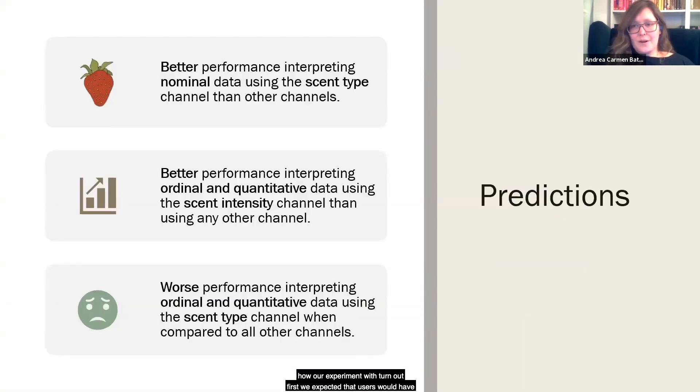We had three main predictions about how our experiment would turn out. First, we expected that users would have better correctness when interpreting nominal data using the scent type channel relative to their use of other channels. And second, we expected that participants would have lower errors interpreting ordinal and quantitative data using scent intensity than they would using other channels.